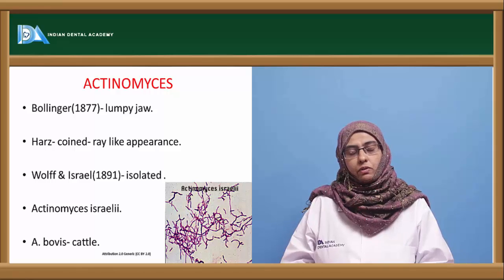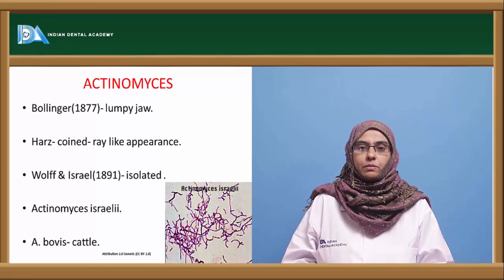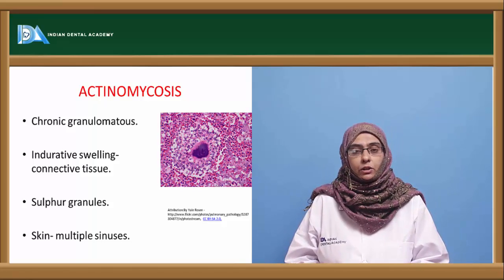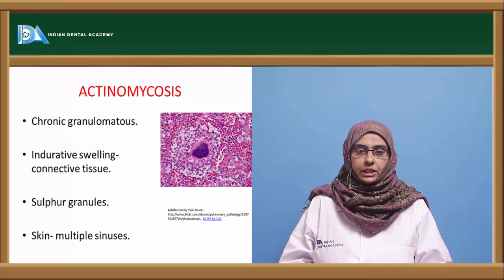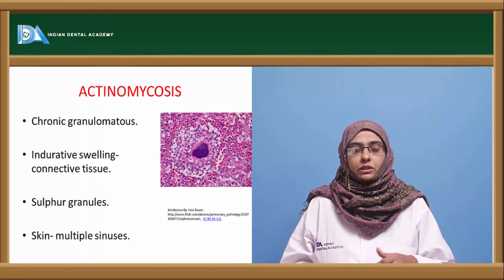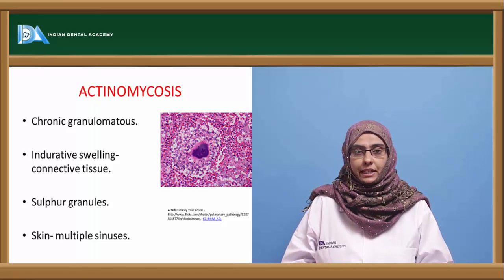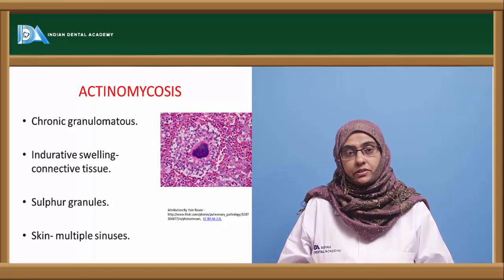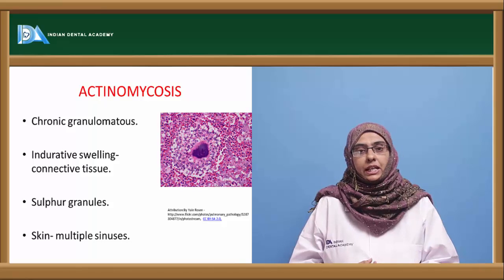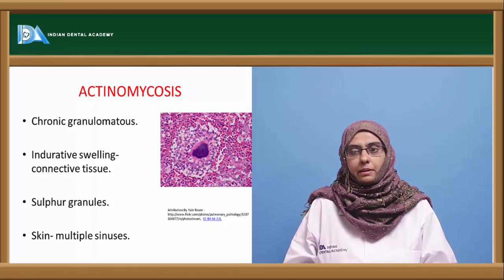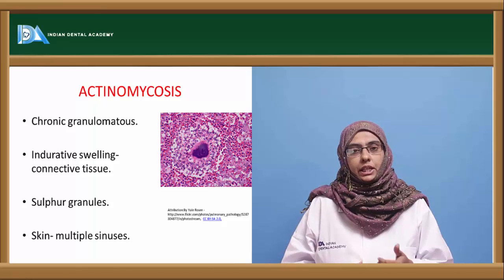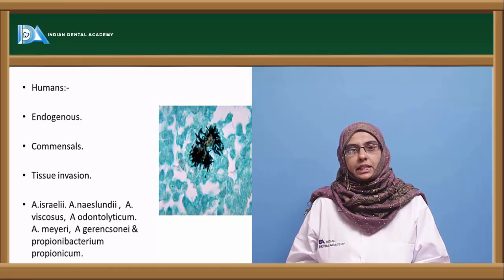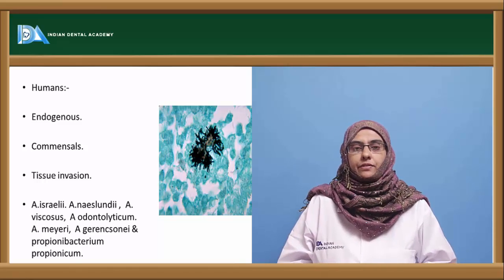The organism involved in cattle disease is Actinomyces bovis. Actinomycosis is a chronic granulomatous disease characterized by indurated swelling especially involving connective tissues, suppuration, and the presence of sulfur granules. The presence of sulfur granules is a characteristic feature helping in lab identification. It causes multiple discharging sinuses in the skin, and the granules in the discharge help identify the organism.